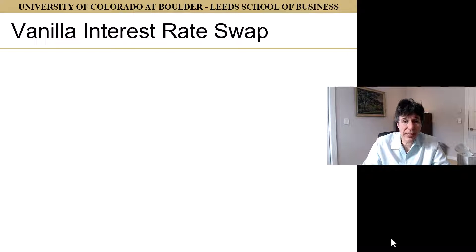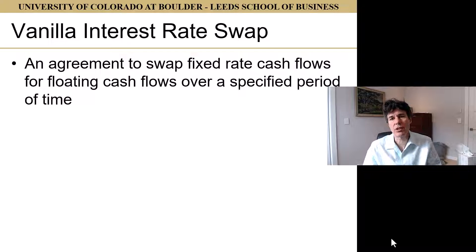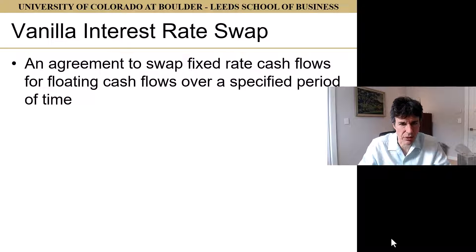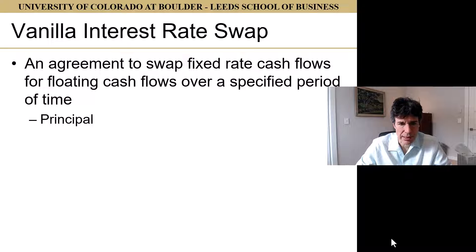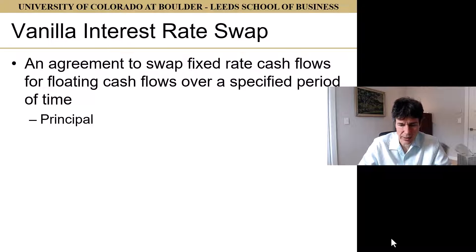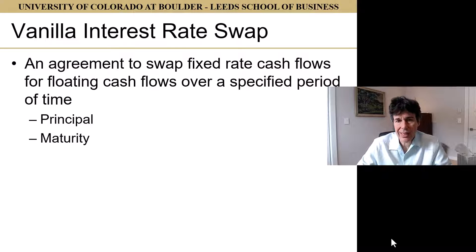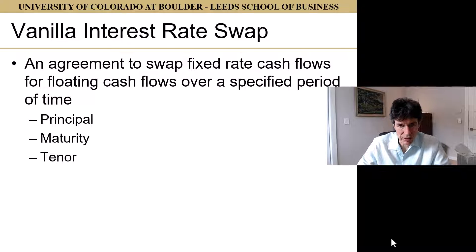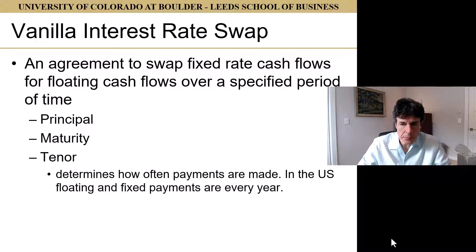What we're going to discuss are vanilla interest rate swaps — an agreement to swap fixed rate cash flows for floating cash flows over a specified period of time. We have a principal amount, say a million or ten million dollars, on which these cash flows are calculated. We have a maturity — five years, two years, or fifty years — defining how long those exchanges happen, and a tenor defining how often: three months, six months, or twelve months. In the US, standard interest rate swaps have fixed and floating payments every year.